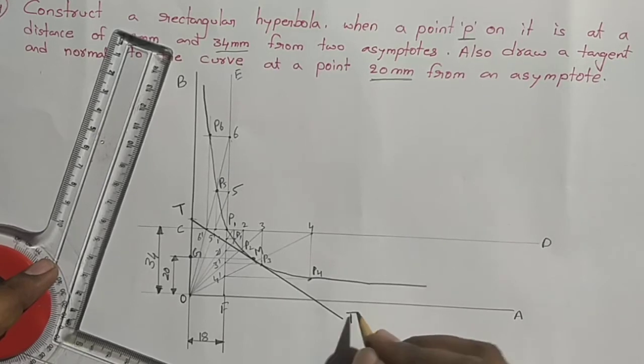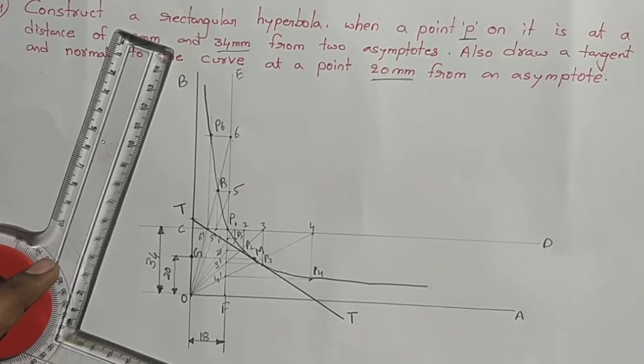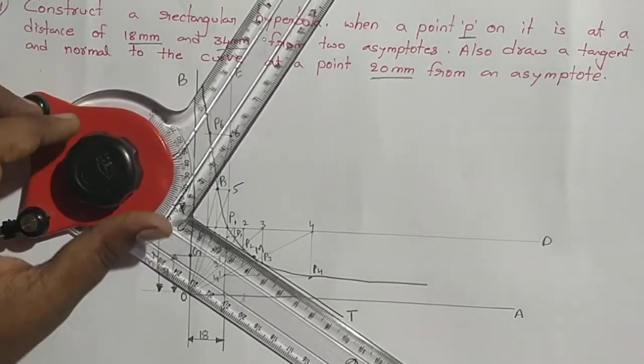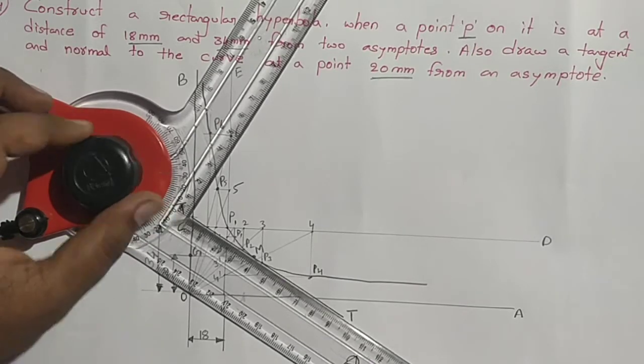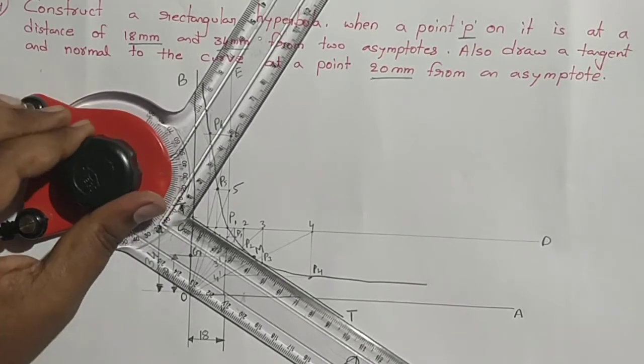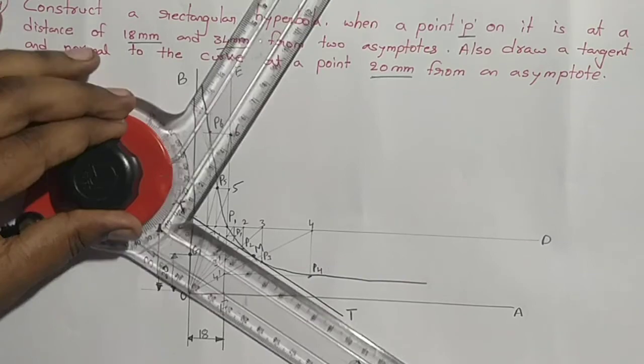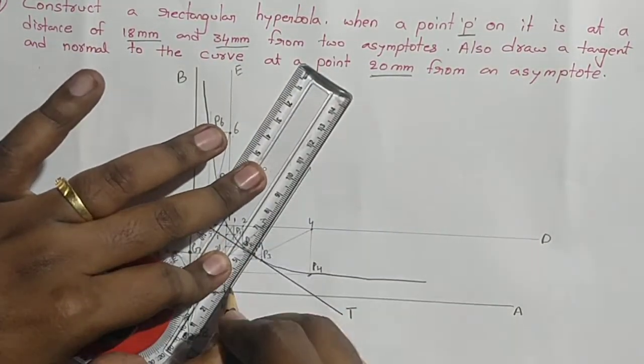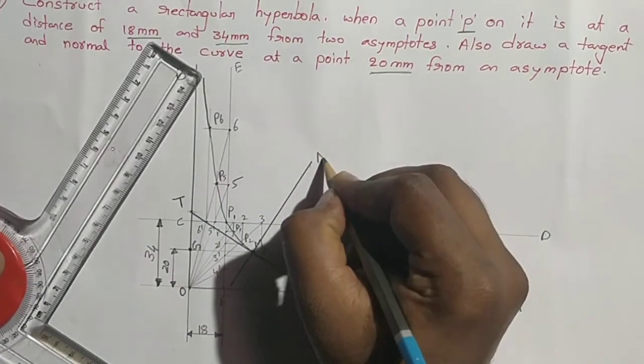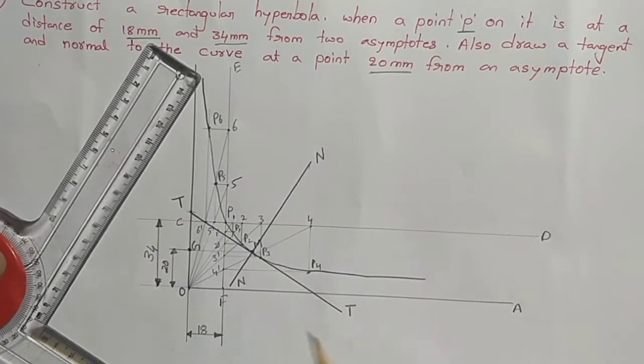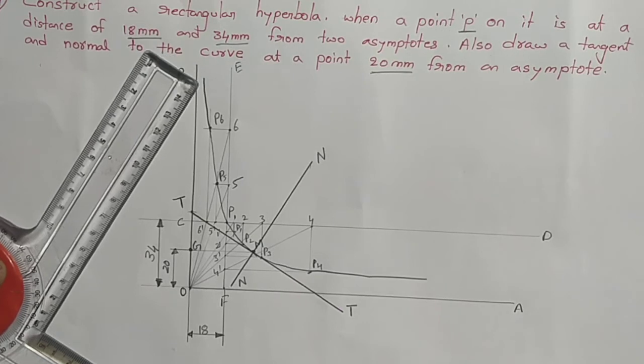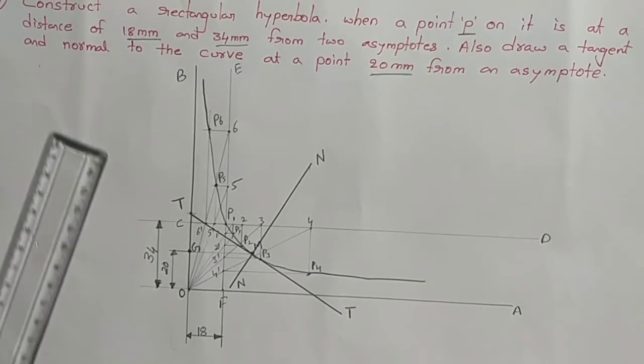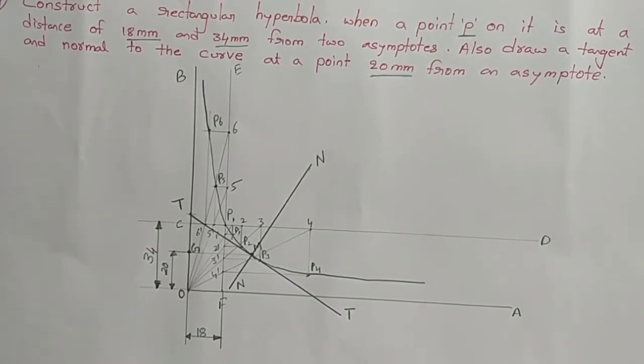The perpendicular to the tangent is the normal. Draw the perpendicular to the tangent at point M. We got the normal, written as N-N at both ends.